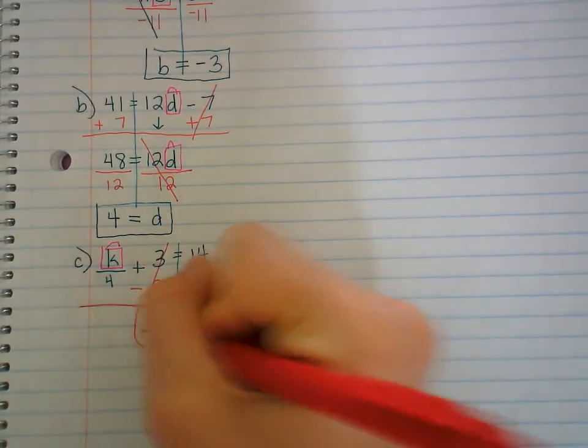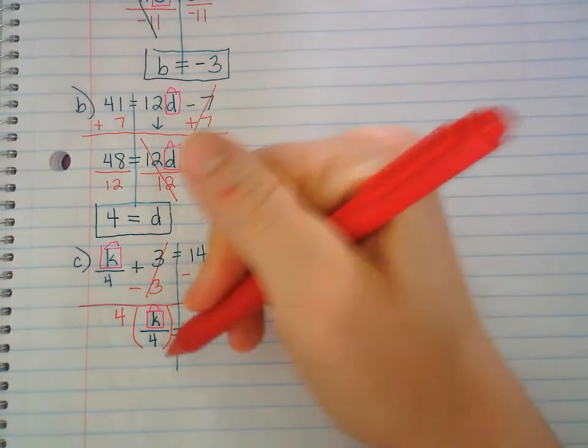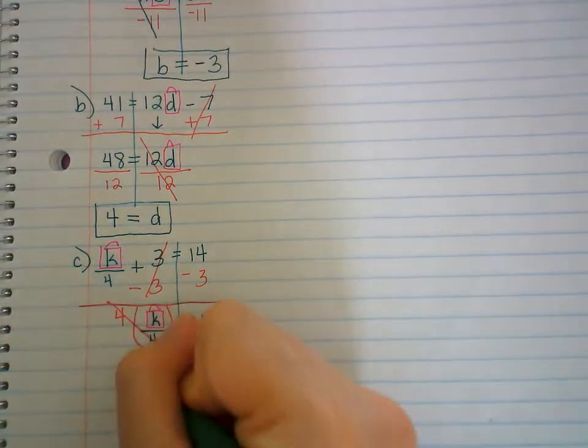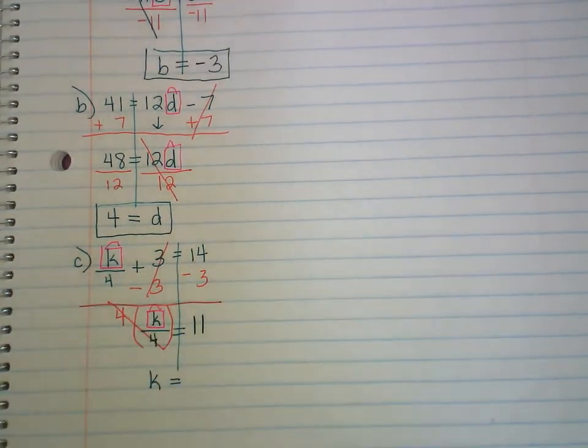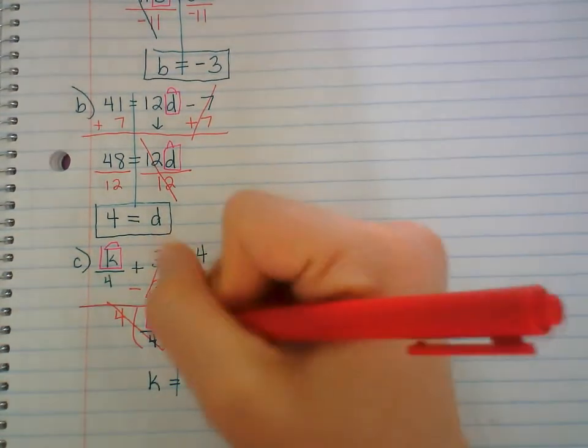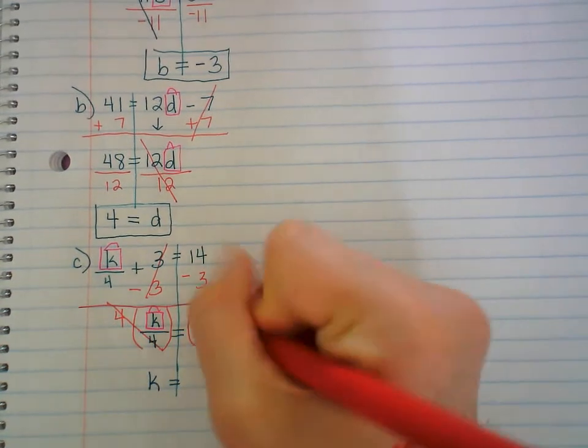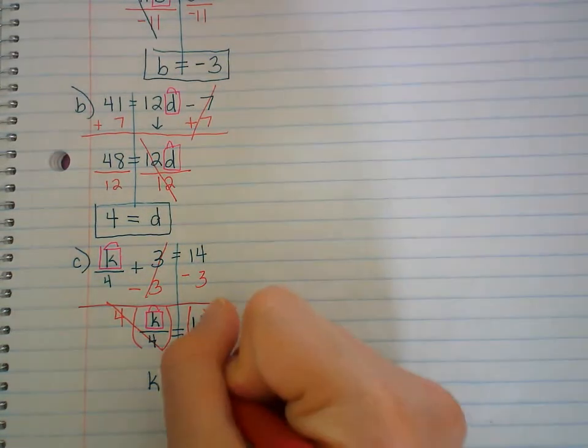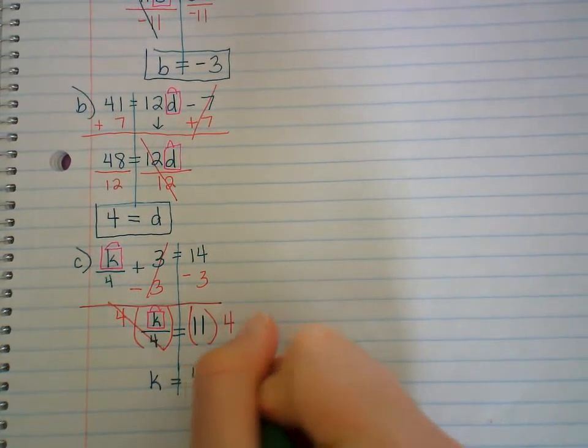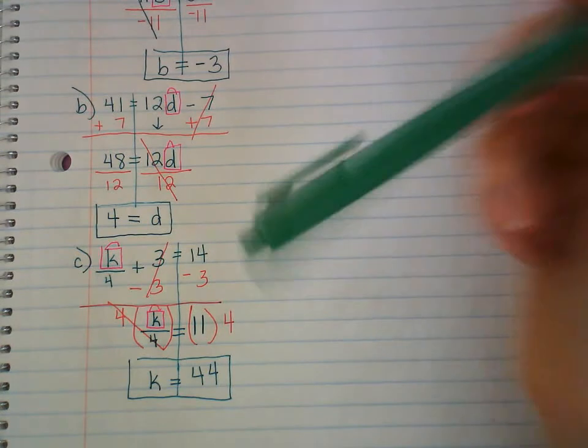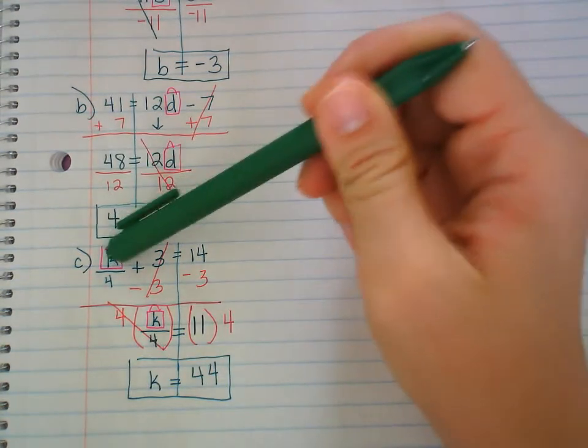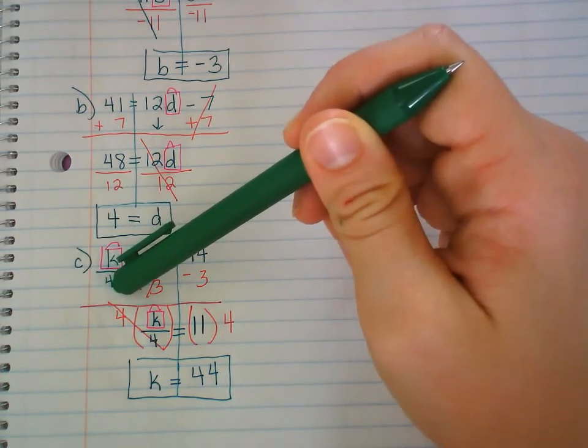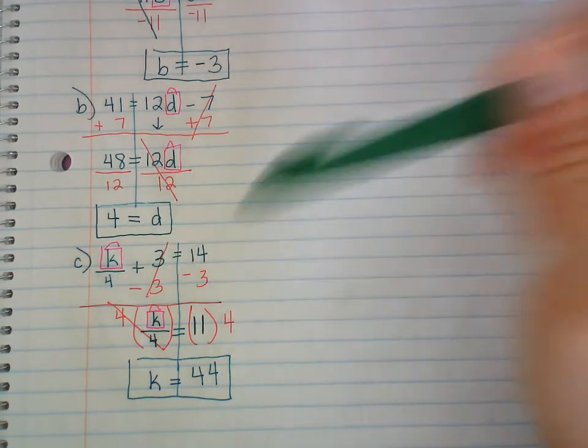3 minus 3 is zero, it's gone. So all we have left on the left side is k divided by 4. Remember, that fraction bar means divide. So right now that's k divided by 4, equals... 14 minus 3 is 11. Undo the fractions by multiplication. Multiply what's in the denominator. 4 divided by 4 is 1, it goes away, it just leaves us with a k. What we do to one side, we do to the other, so we multiplied this side by 4, so we got to multiply this side by 4. 11 times 4 is 44. Plug it in, plug it in. k is 44, so 44 over 4, 44 divided by 4, that's 11. So 11 plus 3 equals 14. Yes.